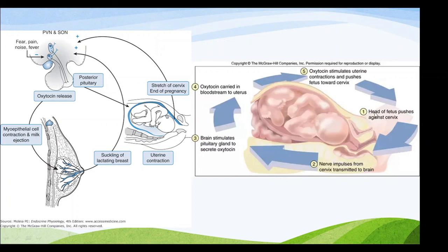The head of the fetus pushes against the cervix, and nerve impulses from the cervix are transmitted to the brain. The brain — specifically the hypothalamus — stimulates the pituitary gland to secrete oxytocin. Oxytocin is carried to the uterus and stimulates uterine contractions, pushing the fetus further toward the cervix.